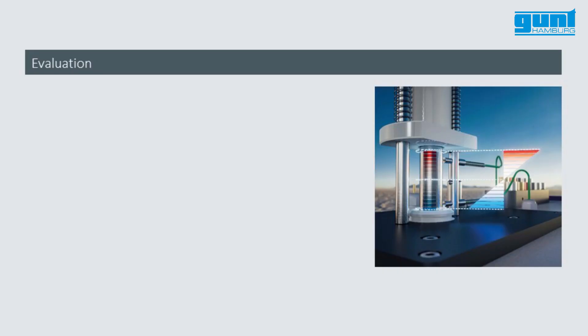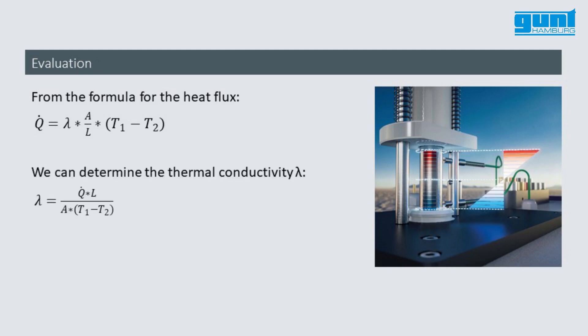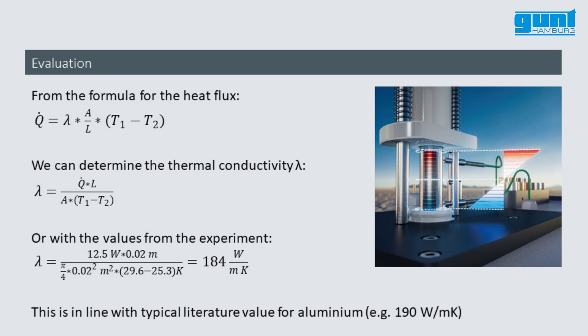The aim of the experiment was to determine the value for the thermal conductivity lambda for aluminium. With the measured values for the temperatures, the transferred or conducted heat, and the length and diameter of the specimen, we can calculate lambda in the following way. The formula for the heat flux shown here can be rearranged as an expression of lambda like this. When we insert our actual measurements from the experiment in the formula above, the result is a value for lambda of 184 watts per meter Kelvin. Within a reasonable margin of error, this is pretty much in line with the values for aluminium typically found in technical literature.